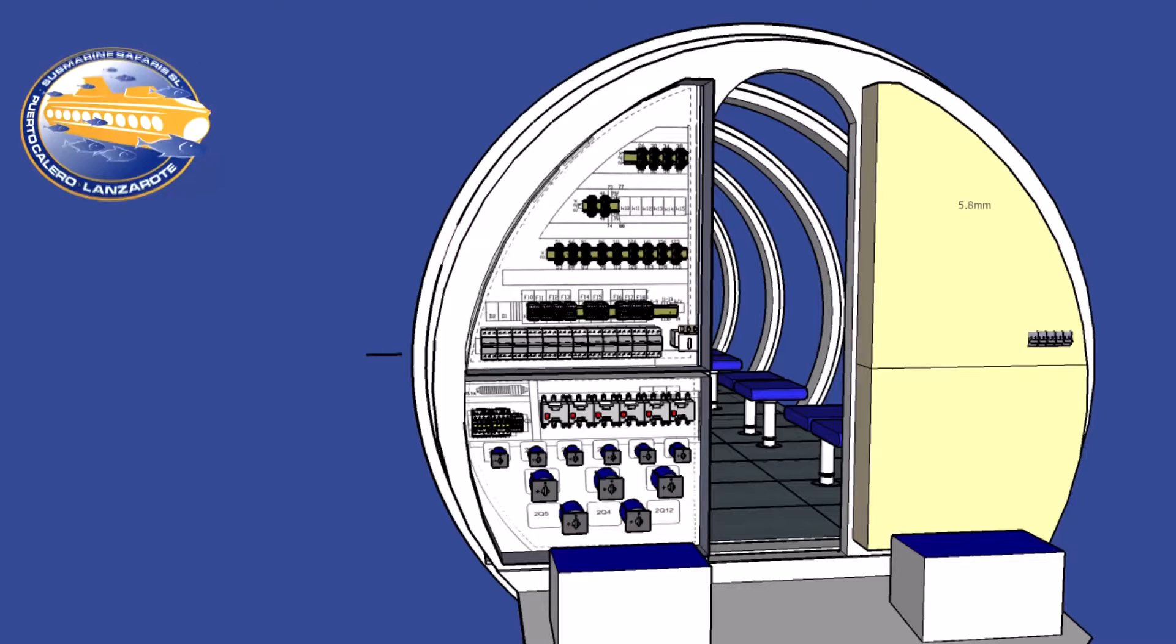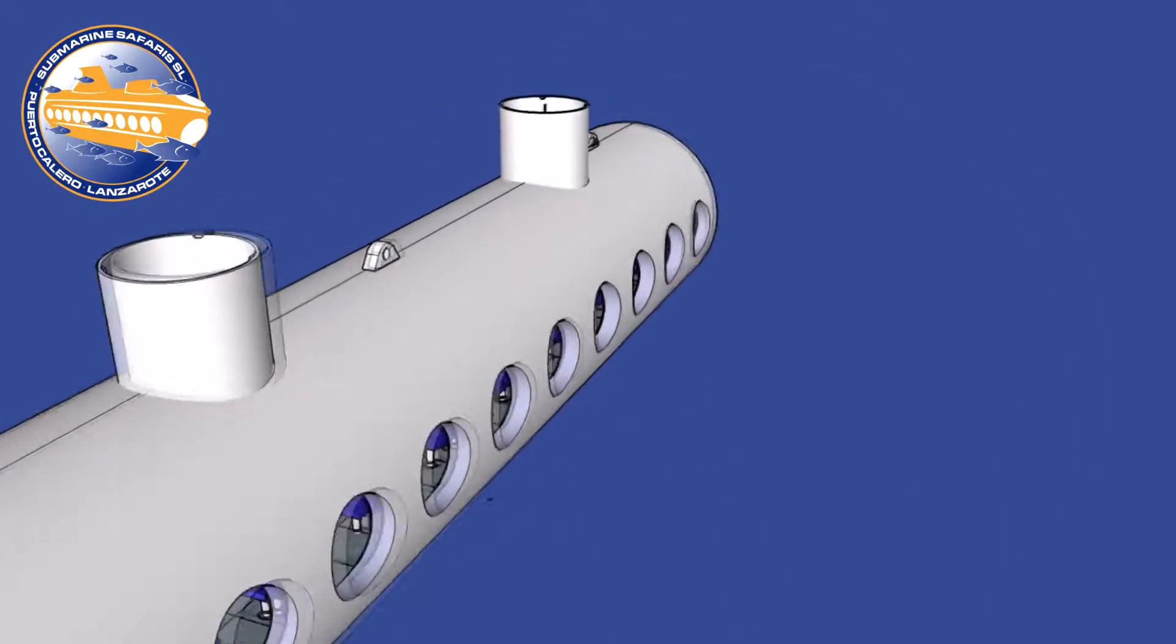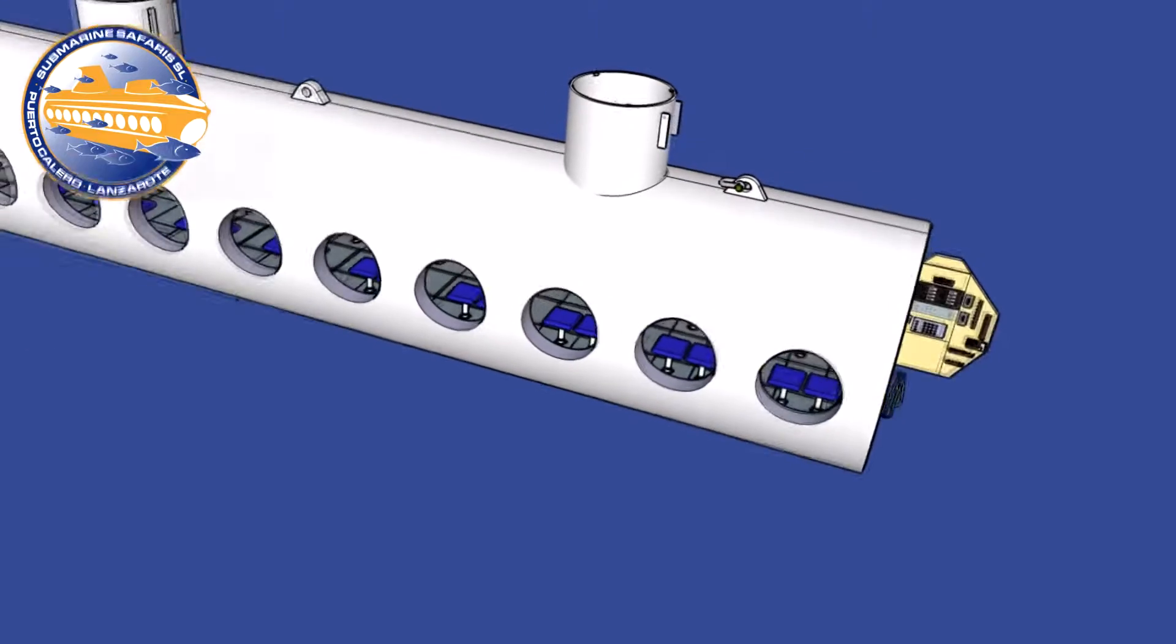Electrical control panels are located at the rear of the submarine. They control all switches and supplies for the vessel. The hull is welded with 26 millimeter thick steel plates.